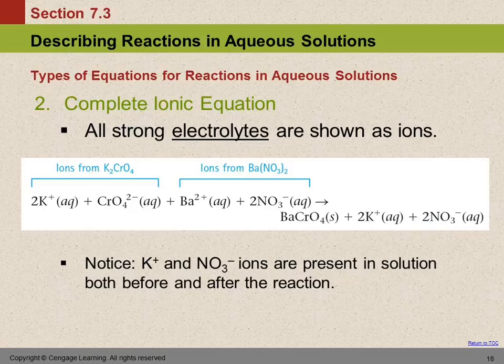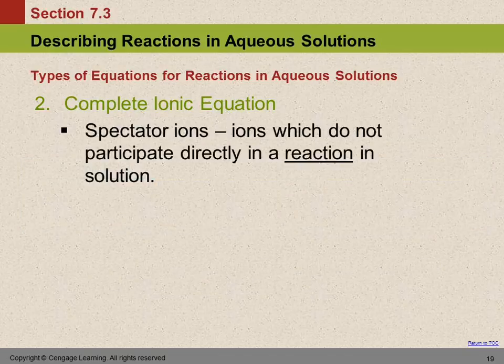So when we look at this, we notice that the potassium ions and the nitrate ions were present in the solution before, and they're still present after, and we call those spectator ions. The spectator ions don't participate directly in the reaction. The barium and the chromate got together. There was a reaction there. The potassium and the nitrate were not part of that.